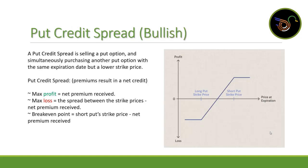Now the last one — the put credit spread — which is my personal favorite, and it's a bullish strategy. It's when we sell a put option and then buy another put option with the same expiration date but a lower strike price. This results in a net credit. Max profit is the premium received when opening the trade. Max loss is the spread between the strike prices minus the premium received. The breakeven point is the short put strike price minus the net premium received.